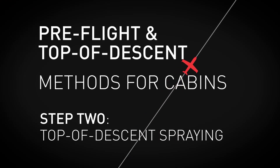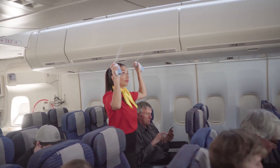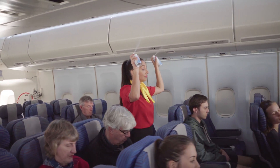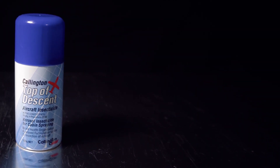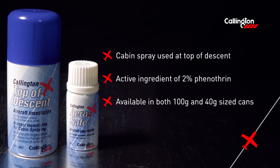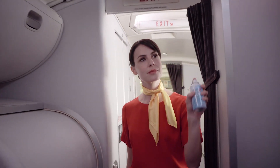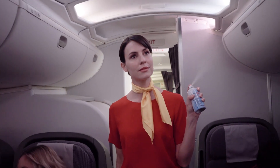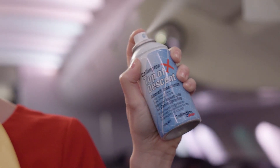The second step in this two-part method, top-of-descent spraying, is carried out with passengers onboard just as the aircraft shifts from cruise phase to descent. For this treatment, Cullington recommends the 100g multi-shot top-of-descent aerosol can, which contains a 2% phenothrin active. For this method of treatment, all overhead and sidewall lockers must be closed. Holding one can of Cullington top-of-descent, spray from the back of the aircraft, keeping a steady walking pace. Cans should be kept at arm's length and directed away from passengers and towards the ceiling and closed overhead lockers.